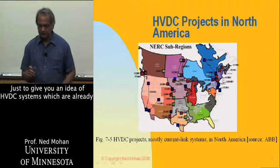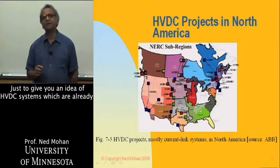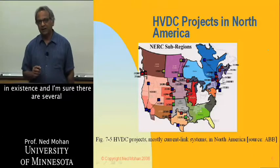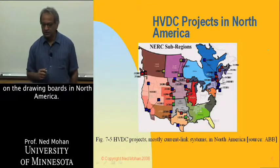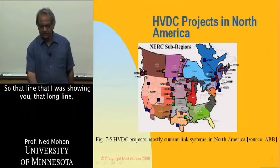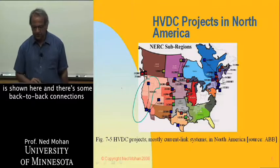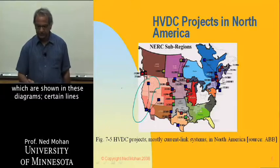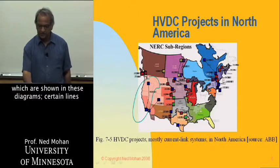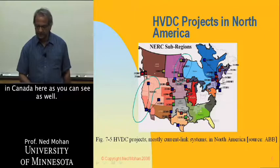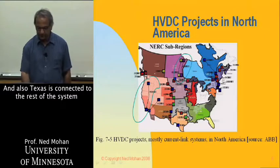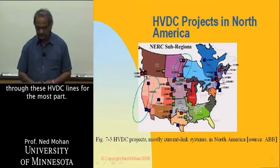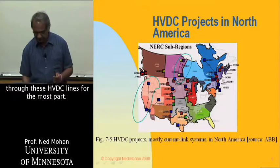To give an idea of HVDC systems already in existence: the more than 800-mile-long line I was showing is highlighted here. There are some back-to-back connections shown in these diagrams, and there are certain lines in Canada as well. Also, Texas is connected to the rest of the system through HVDC lines for the most part.